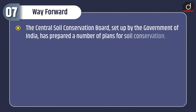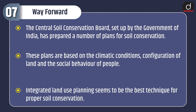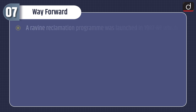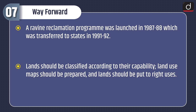Now lastly, let's discuss the way forward. The Central Soil Conservation Board set up by the Government of India has prepared a number of plans for soil conservation. These plans are based on climatic conditions, configuration of land, and the social behaviour of the people. Integrated land use planning seems to be the best technique for proper soil conservation. A ravine reclamation programme was launched in 1987-88, which was transferred to states in 1991-92. Lands should be classified according to their capability, land use maps should be prepared, and lands should be put to right uses.